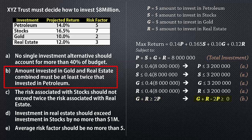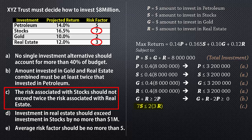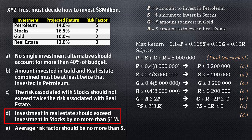This is rewritten as G plus R minus 2P greater than or equal to 0. The requirement in C states that the risk associated with stocks should not exceed twice the risk associated with real estate. And we write 7S less than or equal to 2 times 3R, because the risk factor for stocks is 7 and that for real estate is 3. That can be rewritten as 7S minus 6R less than or equal to 0. For D, investment in real estate should exceed investment in stocks by no more than 1 million, so we write R less than or equal to S plus 1 million.